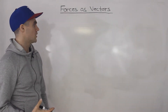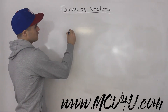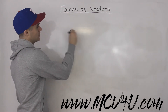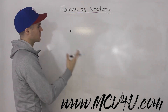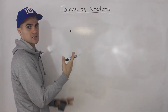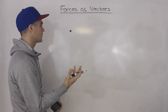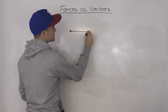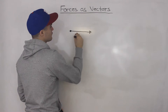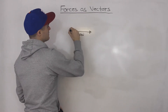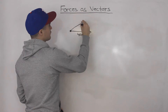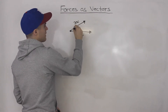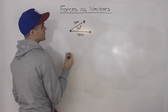Let's do another example where there are two forces acting on an object, but they're going to be acting at an angle other than 90 degrees. When working with 90 degrees, it's easy because you have a right angle triangle and can use SOHCAHTOA. What if we have two forces: 40 newtons and 30 newtons, with 60 degrees between them?